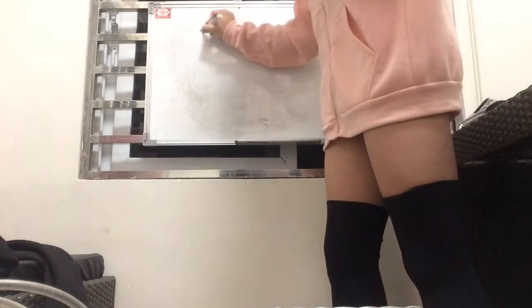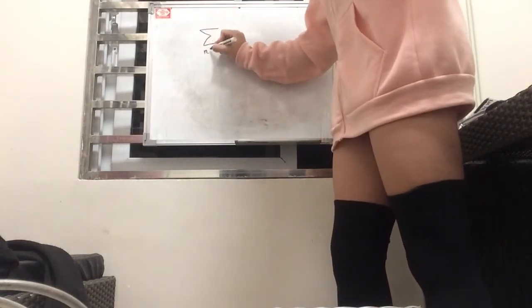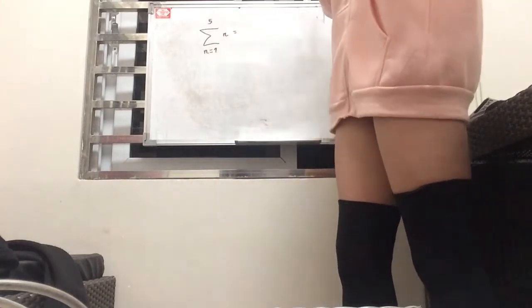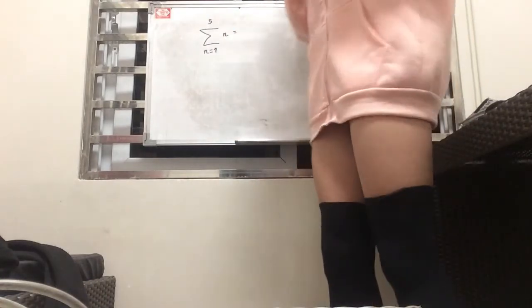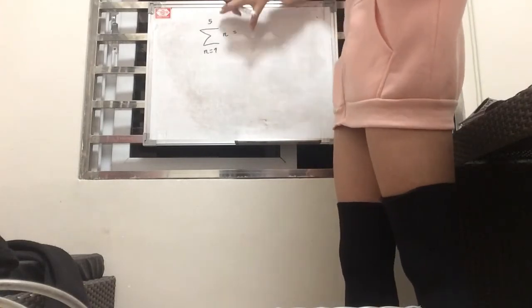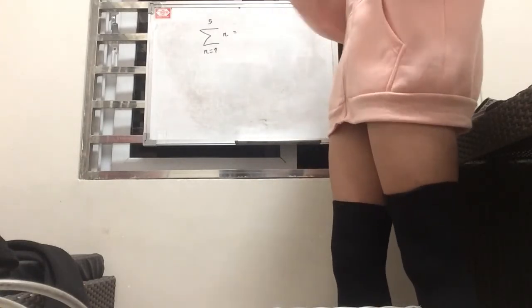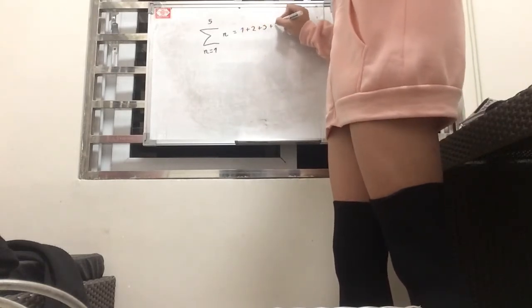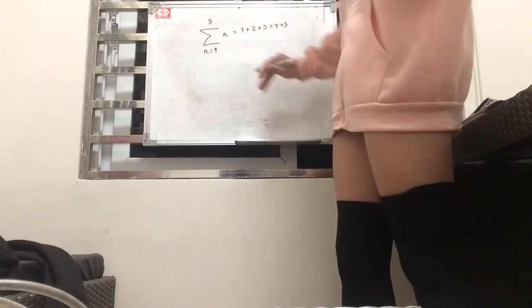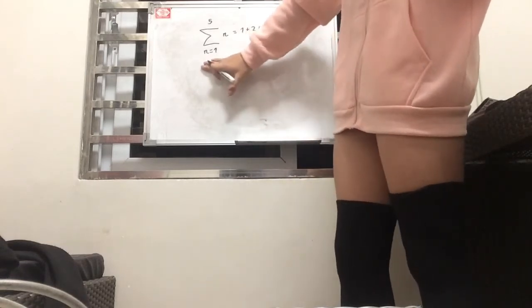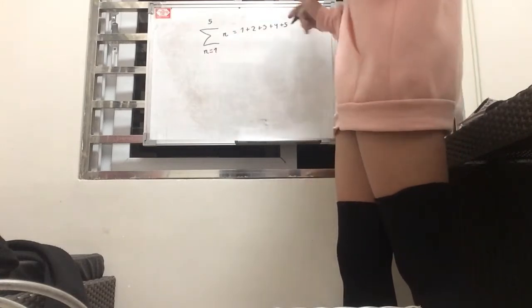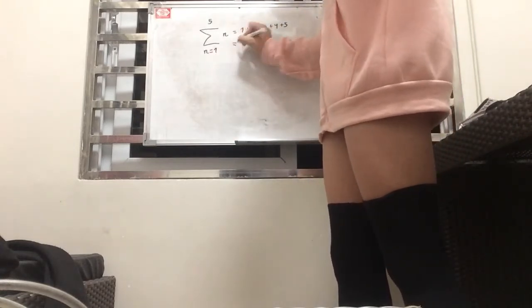Let's start off with an example. What if we're given something like the summation from n equals 1 to 5 of n? How would we evaluate this summation? Basically, we have all numbers from 1 to 5 and we add them all. A little noteworthy thing to know is that this lower bound is actually called the index of the summation.